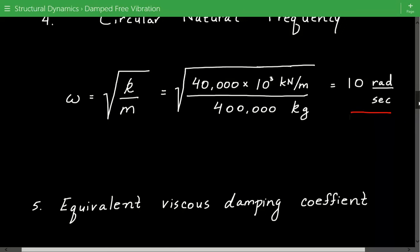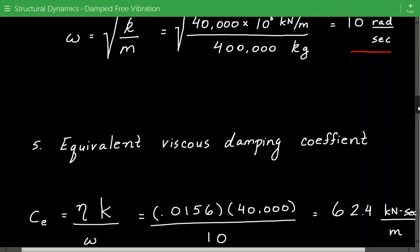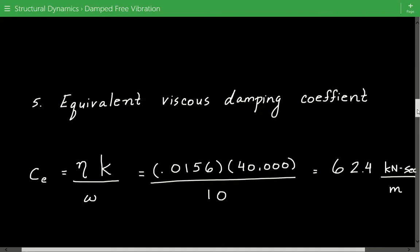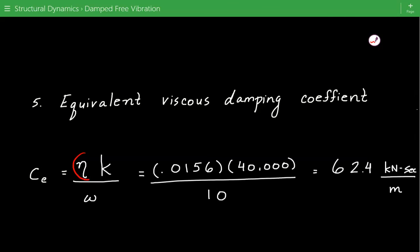And once we know this we can calculate the equivalent viscous damping coefficient, and that's equal to the structural damping coefficient times the stiffness divided by the circular natural frequency. So we just plug in the numbers and we get that the equivalent viscous damping coefficient is equal to 62.4 kilonewton second per meter.